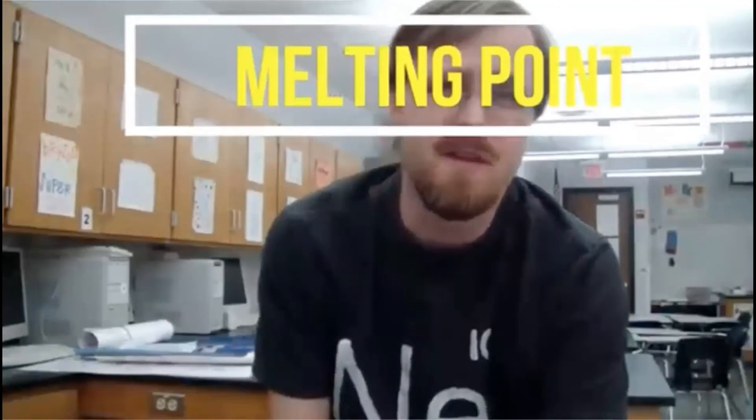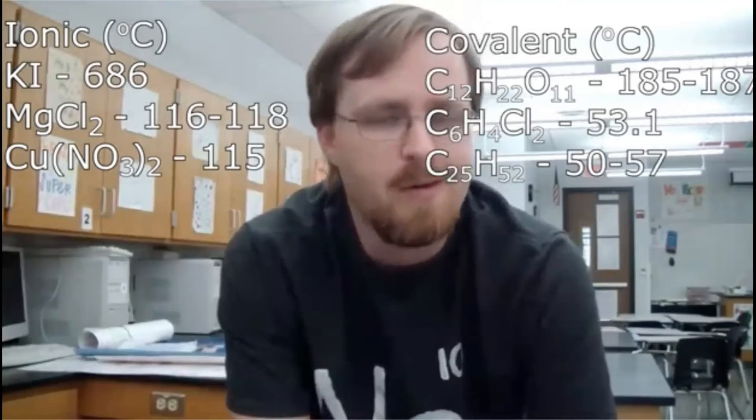The next property we're going to look at is melting point. For that, I have our safety data sheets here, which list all of those physical properties. Instead of reading them off for all six compounds, I'll just post them — and you can very easily see that the ionic compounds generally have a higher melting point than the covalent compounds. Again, there are some exceptions, but overall the ionics tend to have higher melting points than the covalent compounds do.